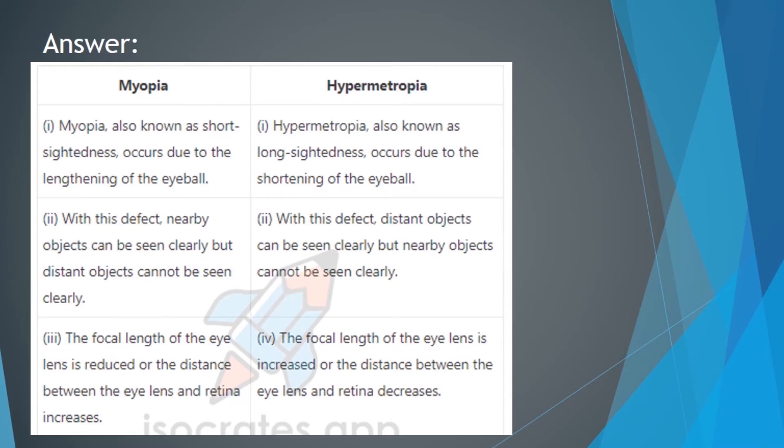Answer: Myopia is also known as short-sightedness. This occurs due to the lengthening of the eyeball. Hypermetropia is known as long-sightedness. This occurs due to the shortening of the eyeball. With this defect, nearby objects can be seen clearly but